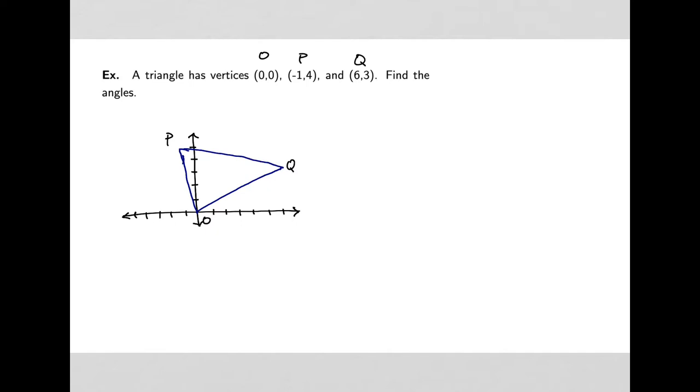So I'm going to look here and say that our vector OP should be fairly easy to see. We're going from the origin to the point P, so we'll have to go negative 1 in the x direction and 4 in the y direction. Then OQ, we would have to go 6 in the x direction and 3 in the y direction.